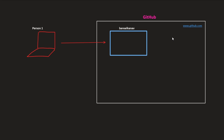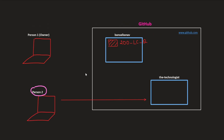Let's consider a scenario where person1 has an account on github.com and wants to post a project called '200 LeetCode Questions'. This person is the owner of this repository. Now, another person in the world can collaborate and contribute to this source code. Let's assume person2 is interested in the code written by person1 — but he can't directly change the source code. So first, he has to create a copy of this code on his account, which is called forking a GitHub repository.